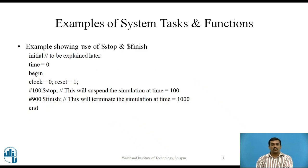An example showing the use of Stop and Finish Tasks is given. The execution of the Stop Task puts the simulation in an interactive mode, allowing the designer to debug the design. The Stop Task is used to suspend the simulation and examine signal values. The Finish Task terminates the simulation. In the given example, simulation will be suspended at time equal to 100 and terminated at time equal to 1000.